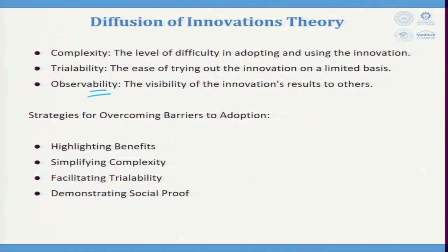The strategies for overcoming barriers to adoption are: highlight the benefits, simplify complexity, facilitate trialability, and demonstrate social proof. By doing so, you are able to overcome barriers to adoption.